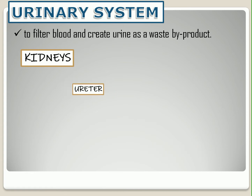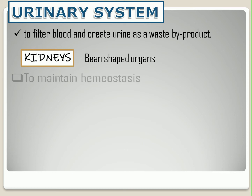Let's first discuss the kidneys. They are the two bean-shaped organs in the renal system. The main role of the kidneys is maintaining homeostasis.